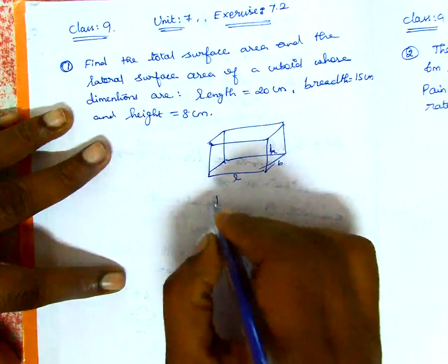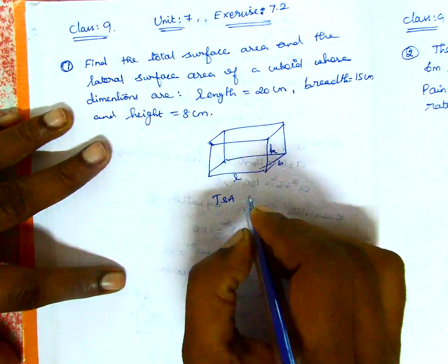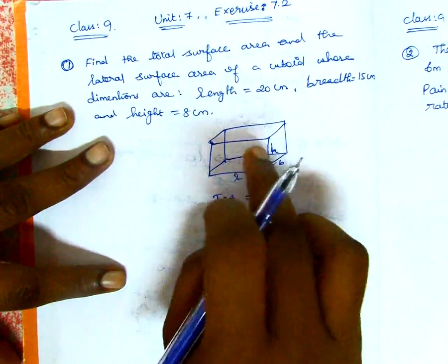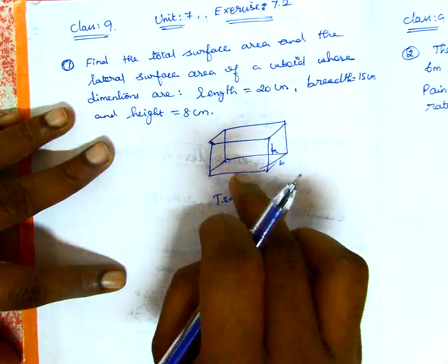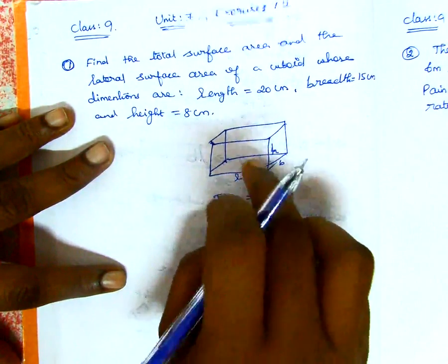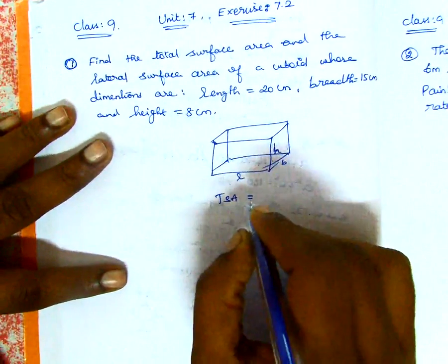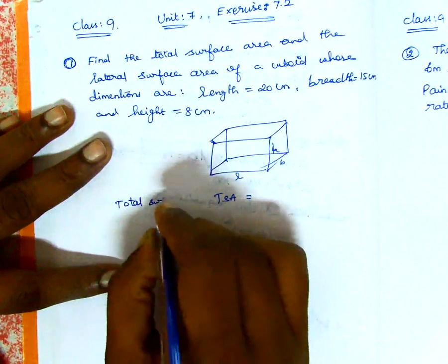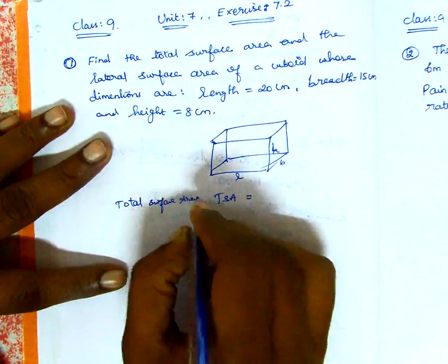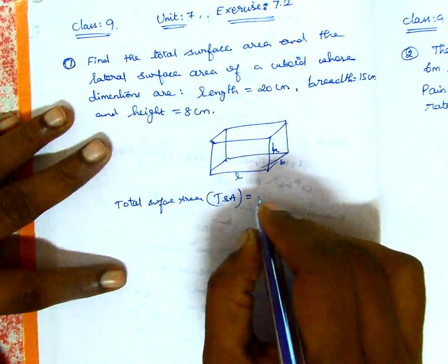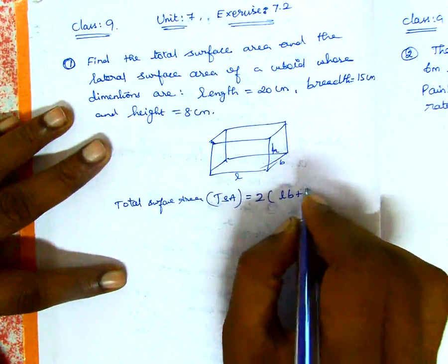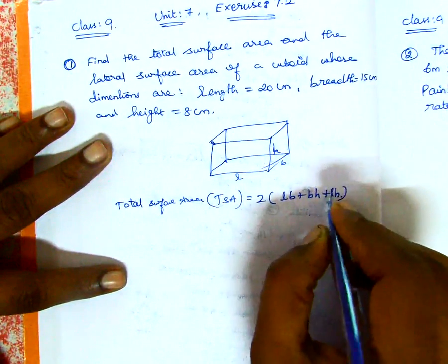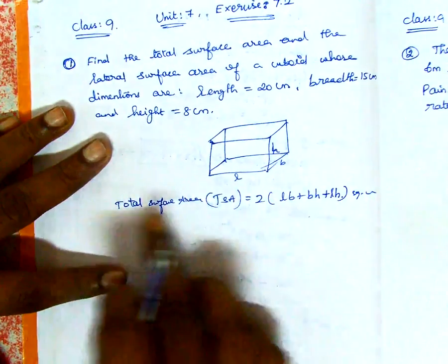TSA is the total surface area. For total surface area we consider all 6 sides — 4 side faces plus top and bottom. We calculate the TSA across all 6 sides. The TSA formula is: 2 into (LB + BH + LH) square units.